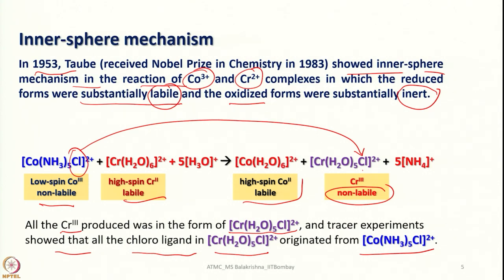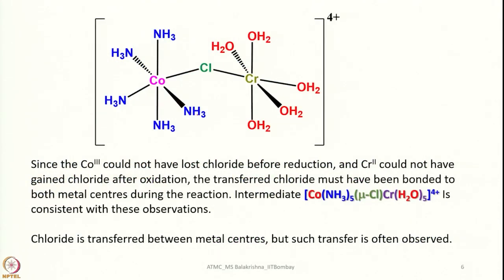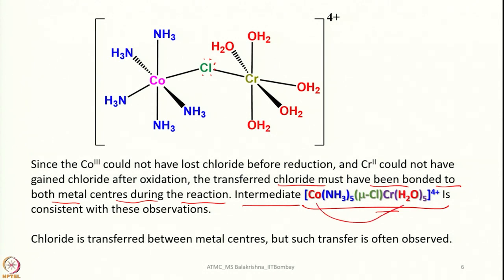This is about inner sphere mechanism. We can visualize the bridging intermediate or transition state: chloride, after establishing a covalent bond, still has three lone pairs of electrons, and a pair of electrons can be donated to chromium while one water molecule leaves, establishing a bridge prior to electron transfer. Since cobalt 3+ could not have lost chloride before reduction and chromium could not have gained chloride after oxidation, the transferred chloride must have been bonded to both metal centers during the reaction.